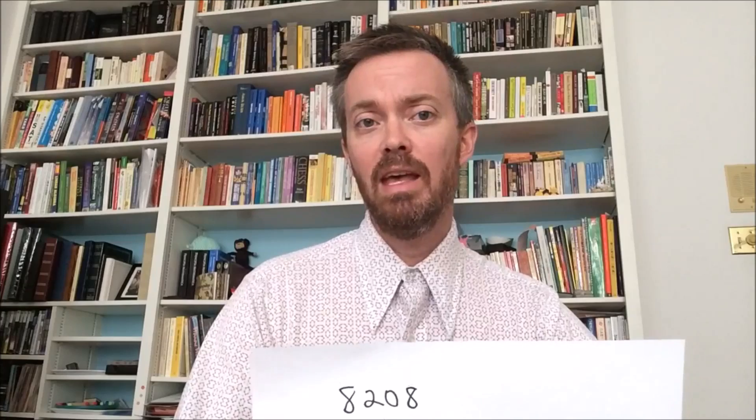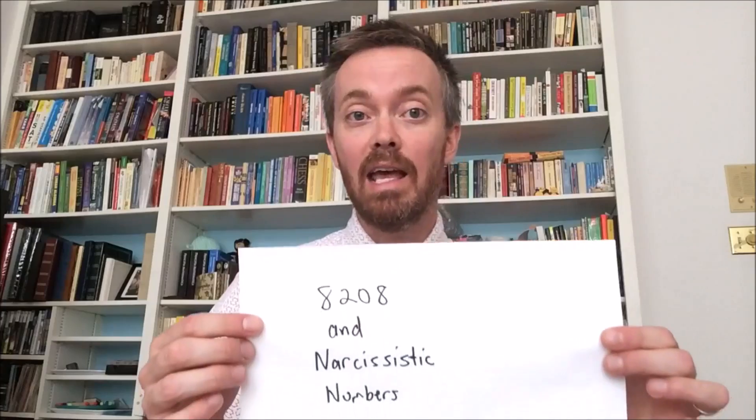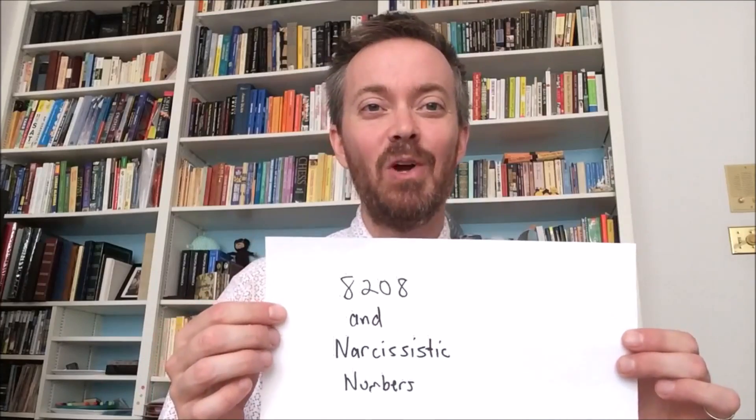So that just leaves us with one number left to discuss, and that would be the number 8208. And this is actually what's known as a narcissistic number. So who thought numbers could be narcissistic? Who knew? I didn't know. But it turns out, in fact, that there are numbers that are narcissistic. So what makes a number narcissistic? How can a number possibly be narcissistic? What properties must it have? So let's take a look at the example of what makes 8208 narcissistic, and we'll look at some other examples as well.